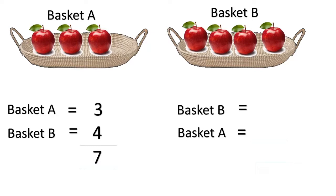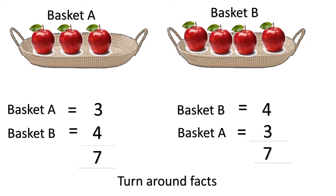Now let's try to first count the apples in basket B and add the apples in basket A. In basket B we know there are four apples, and in basket A there are three apples. Tell me how much is four plus three? It is seven. We see that three plus four is also seven, and four plus three is also seven. This is called turn around facts.